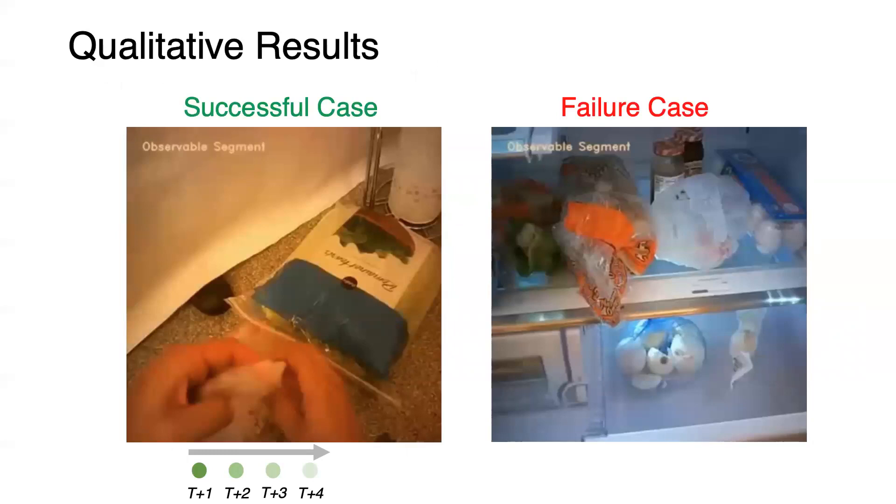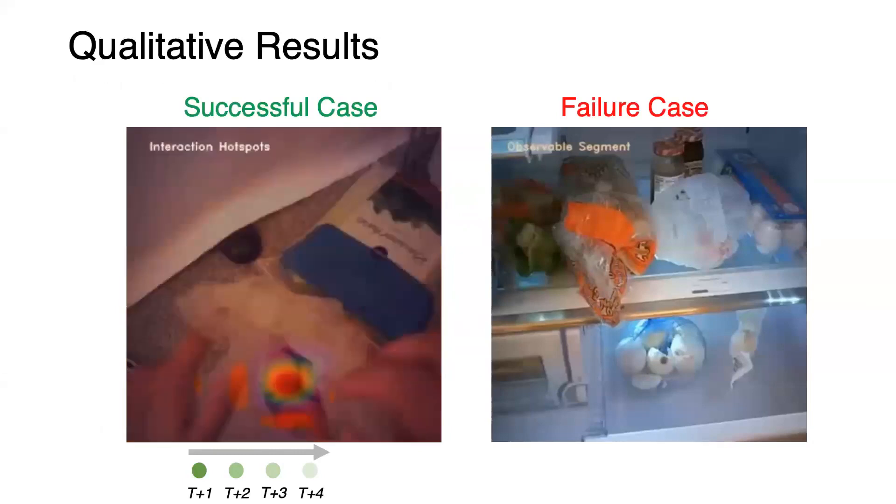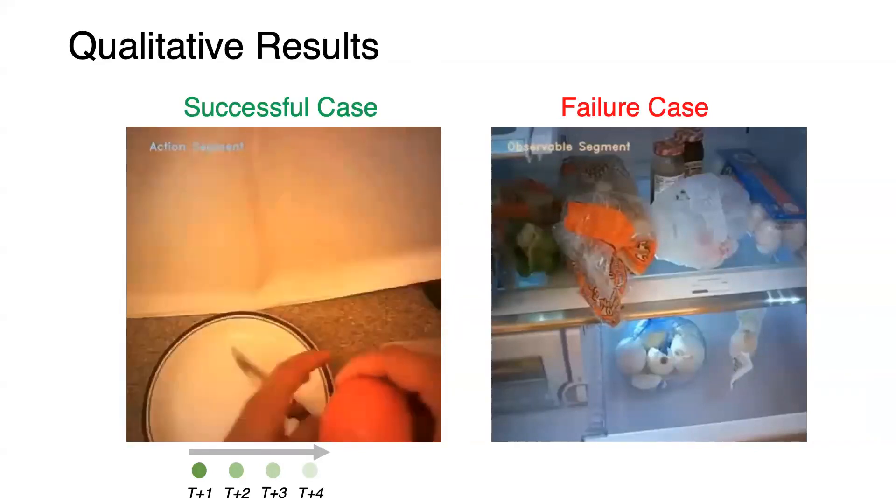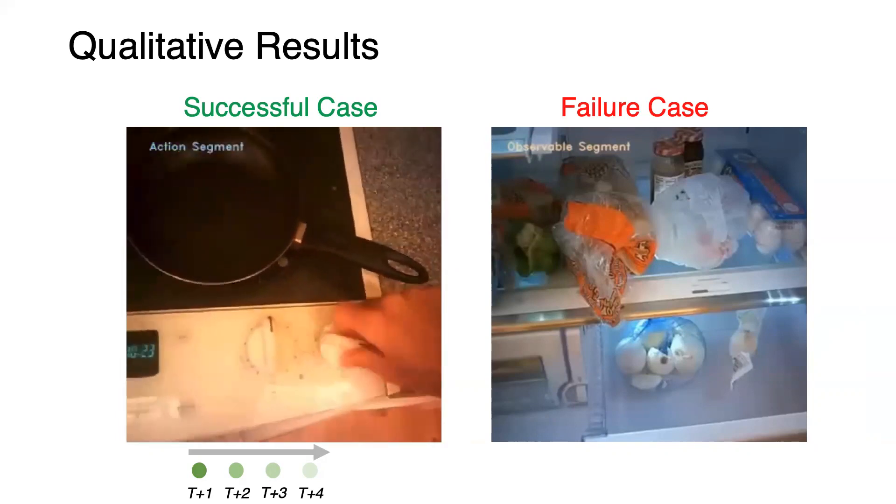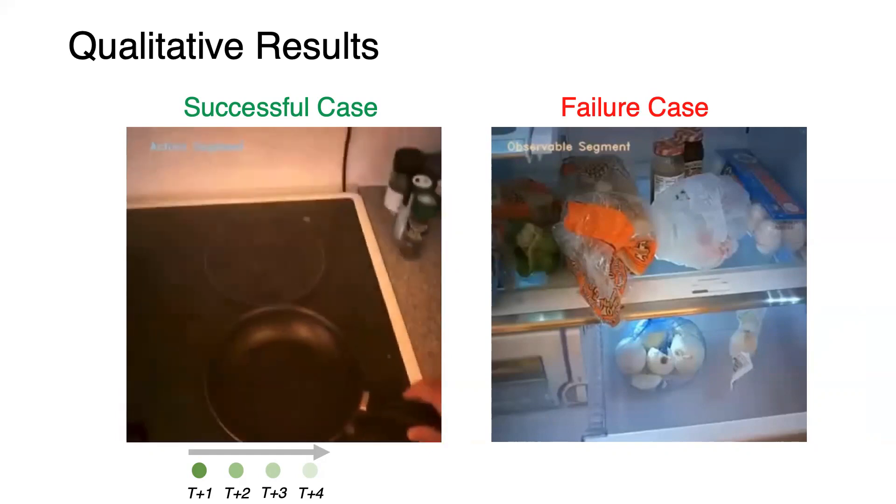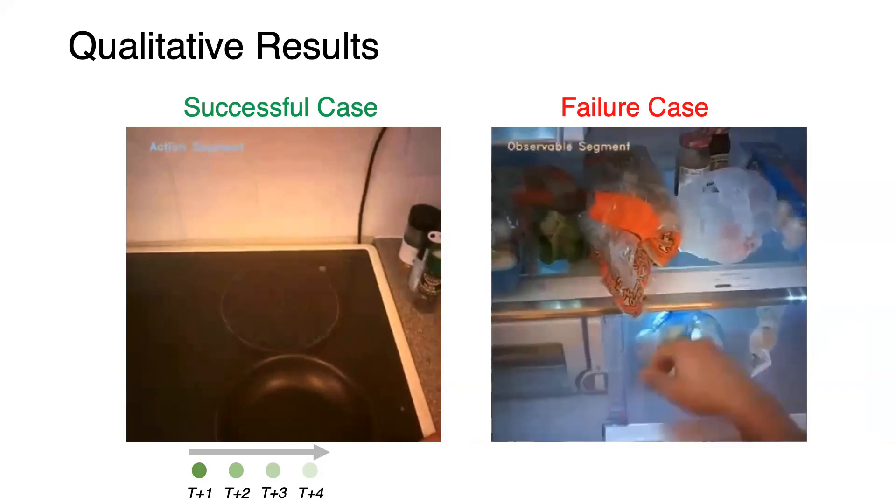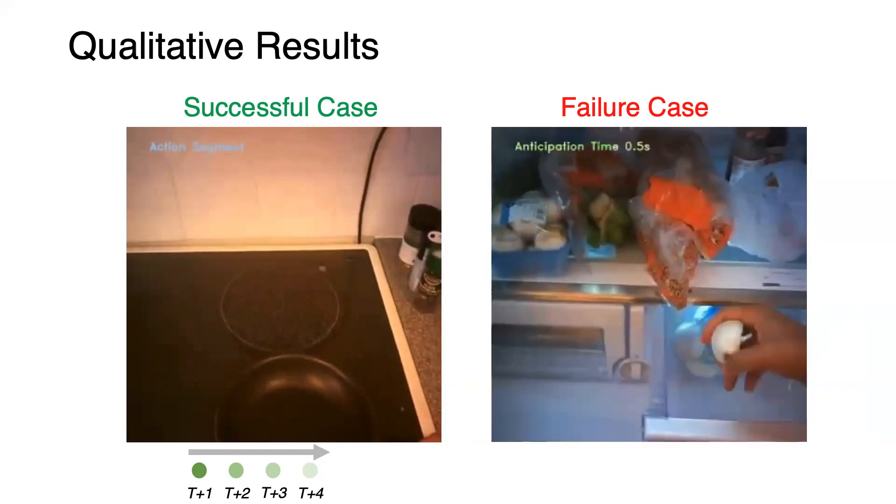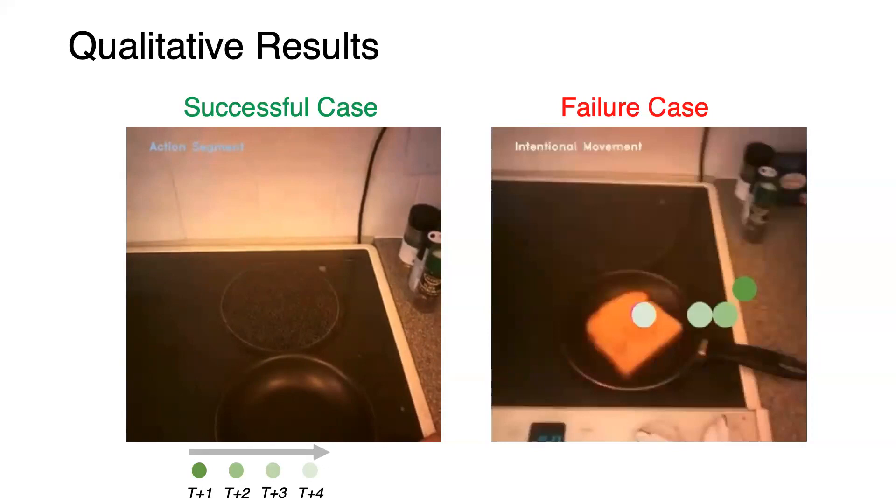Here are some qualitative results of our method. As shown in the successful case, the motor attention almost always attends to the predicted objects and interaction hotspots. Our model also yields certain limitations. Take the failure cases for example. The model is more likely to fail when the future object is not visible or the future object is occluded.